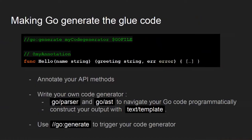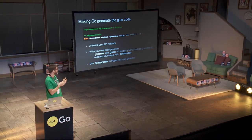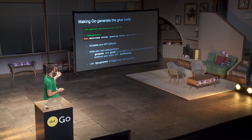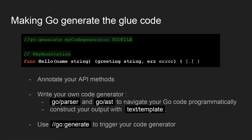Just write a code generator to do it for you. To do that, you can use a lot of Go standard tools. From Go source code, you can use the `go/parser` package and Go AST to navigate your Go code programmatically, then construct any output you want with `text/template`, which is like `html/template` but for plain text. Then you can use a `go:generate` directive in your code to actually trigger your code generator.